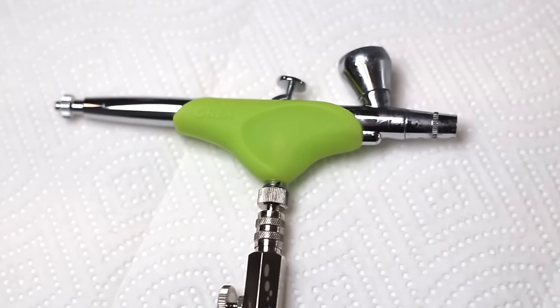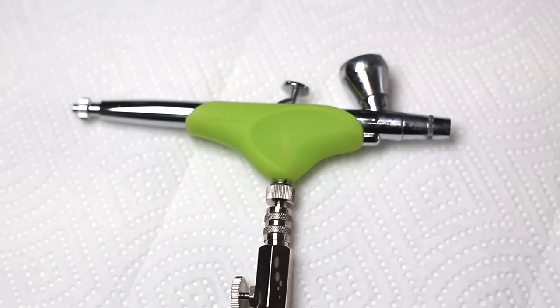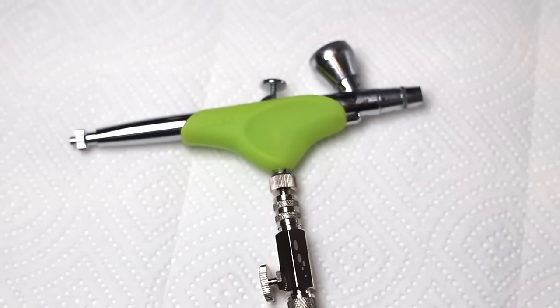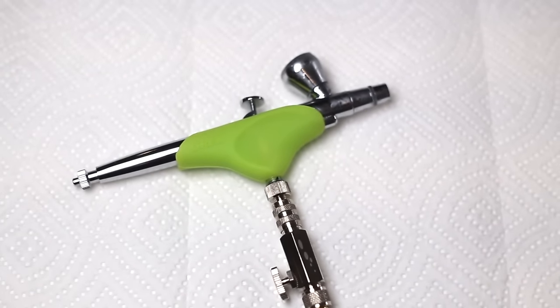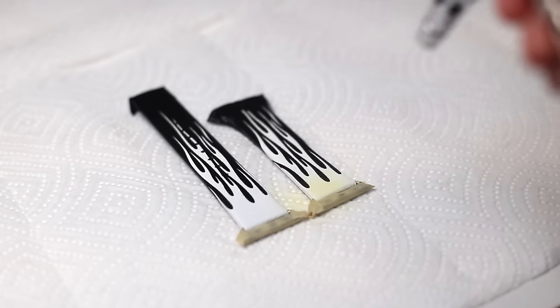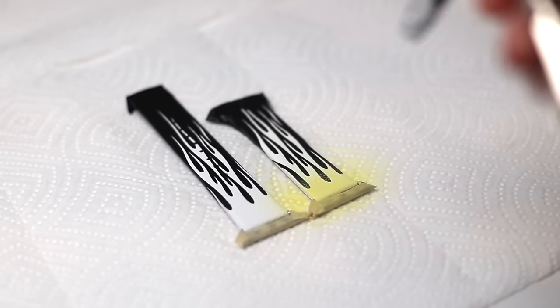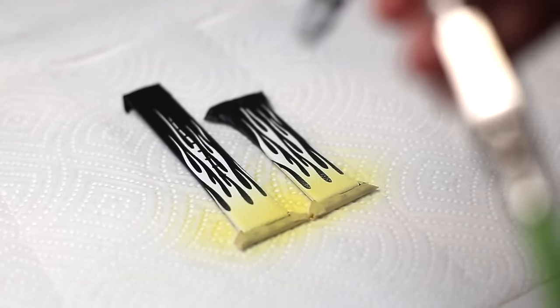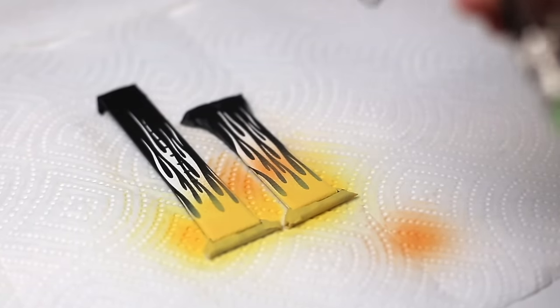Next it's time to bust out our airbrush. This fade can also absolutely be done with a brush, however fading with an airbrush is a lot easier and super satisfying when you get those smooth gradients. So I've loaded my first color, yellow, into my gun and I'm going to apply light coats to one portion of the band.